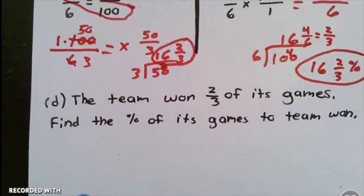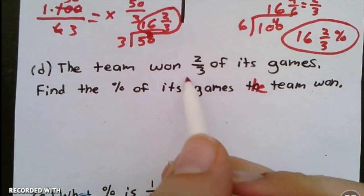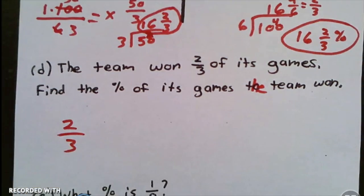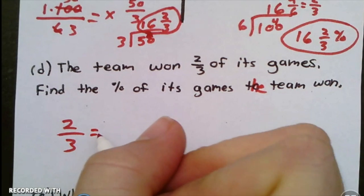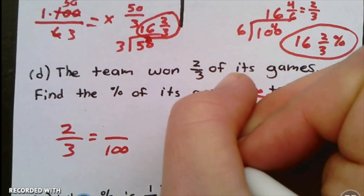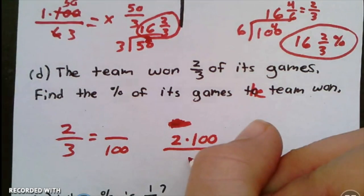Here's another example: the team won two-thirds of its games. Find the percent of games the team won. In this one we want to basically find out what percent 2/3 is, so I can use either strategy, right? I can use a proportion or multiply by a hundred percent. If I use a proportion, I'm going to say that this equals this, which means two times one hundred divided by three.